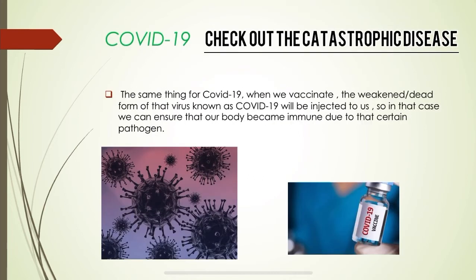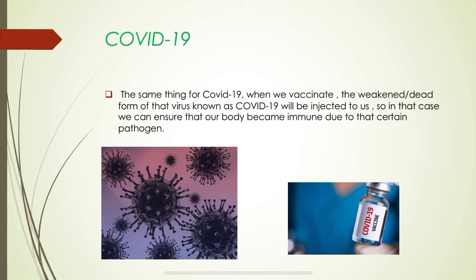The same applies to COVID-19. When we vaccinate, the weakened or dead form of that virus — COVID-19 — is injected into us, as seen in the picture. This ensures our body becomes immune to that pathogen. If we get COVID-19 again, we won't feel sick at all, because memory cells for COVID-19 were produced the first time, so whenever the virus enters the body, antibodies are released immediately.